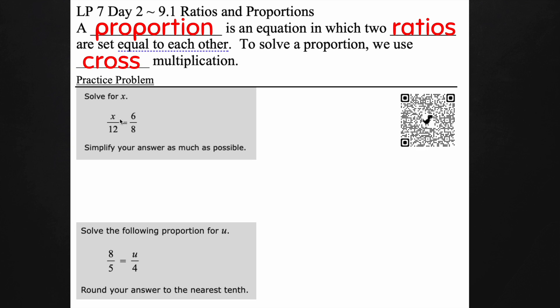Cross multiplication literally means we're going to go across from top to bottom and we're going to do that twice. So we're going to go from left to right and from right to left.